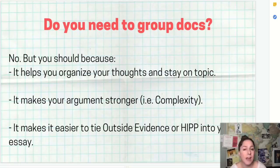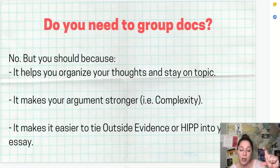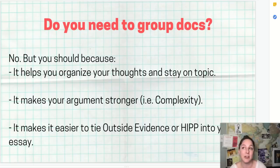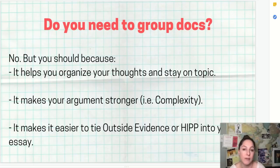In a five-document DBQ, this means you'll probably just have two body paragraphs. You'll have an intro with your thesis and maybe context, and then two body paragraphs where you discuss the three to five documents you're going to address.